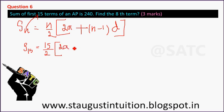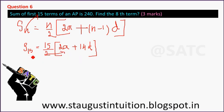Substituting: 2A plus 15 minus 1, which is 14, into D. Now S15 is equal to 240.